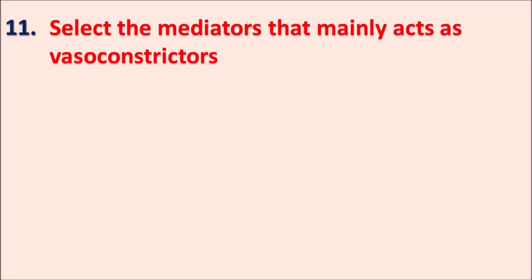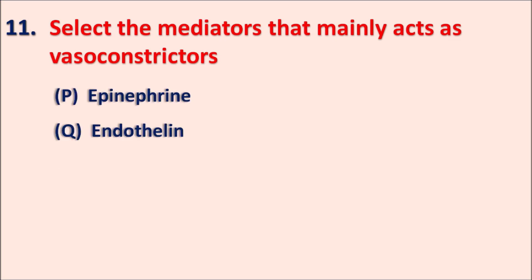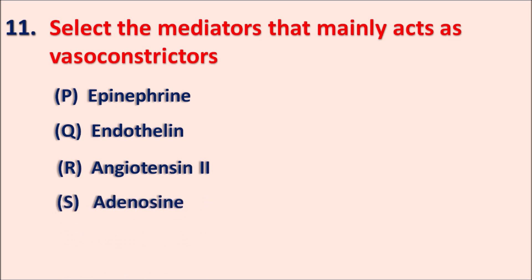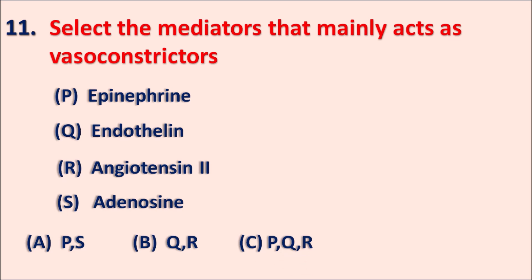Question eleven: Select the mediators that mainly act as vasoconstrictors. P - epinephrine, Q - endothelin, R - angiotensin II, S - adenosine. The options are A: PS, B: QR, C: PQR, and D: QRS. Which of these mediators mainly act as vasoconstrictors?